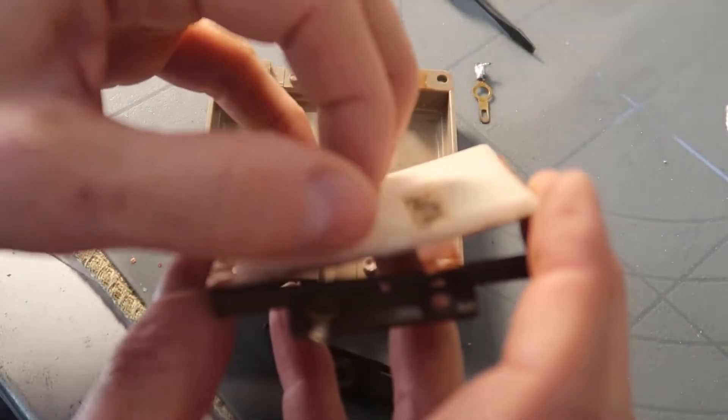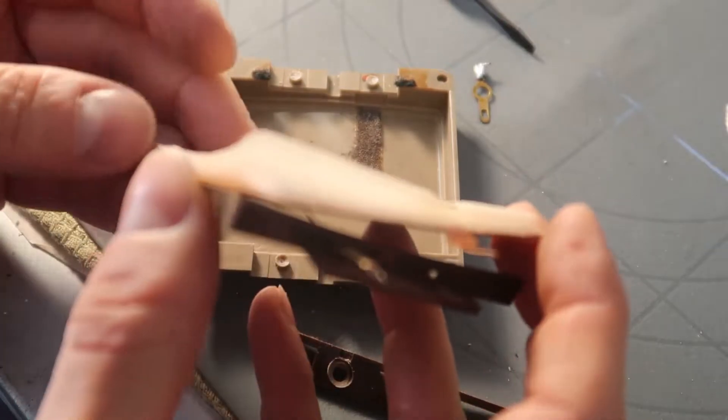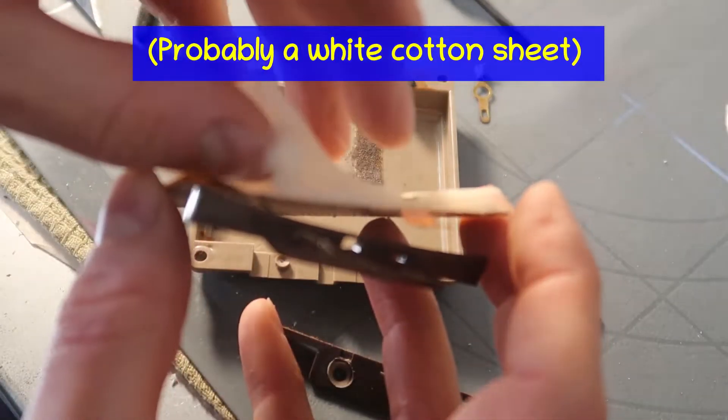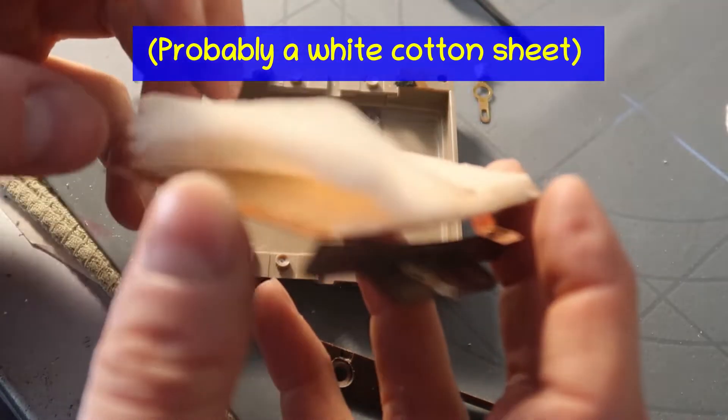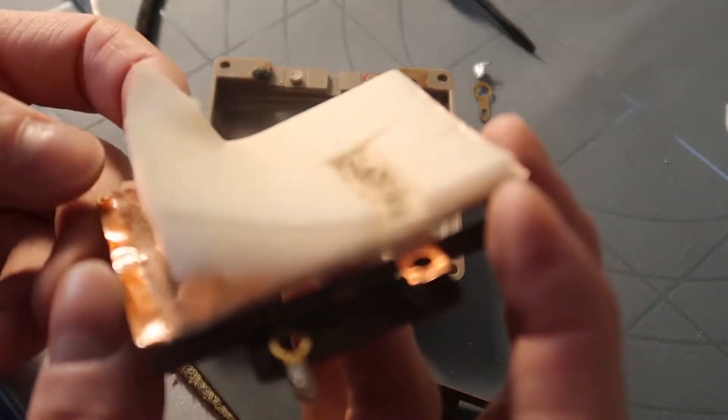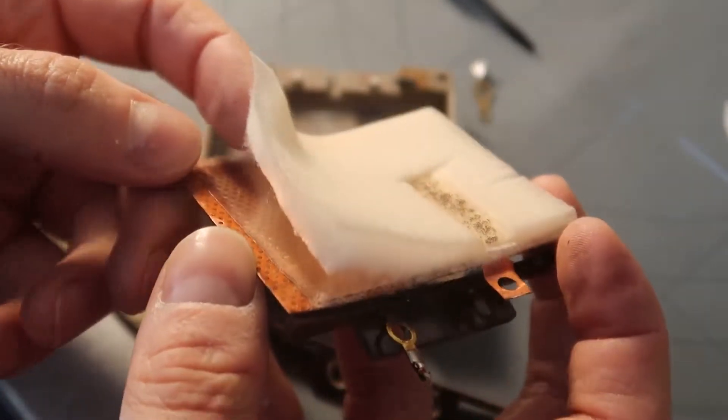And this piece of wadding here is to protect the back side of the tweeter which is metalized with a very thin coating of copper, supposedly.